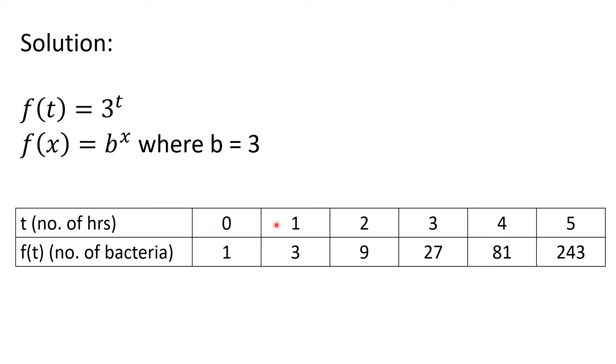We'll write the values of T in the first row: T equals 0, T equals 1, T equals 2, and so on. And then to compute for the number of bacteria, we'll use this formula. We will just substitute the values of T to this exponent, and then solve for 3 to the T. That will be the value of F of T, or Y.